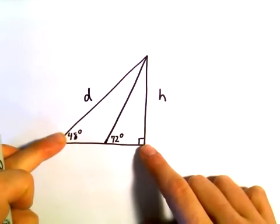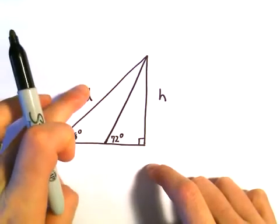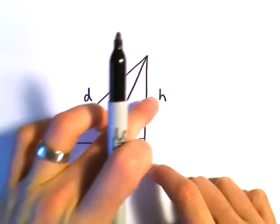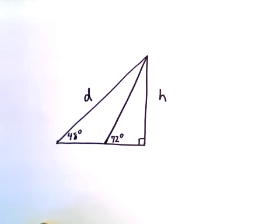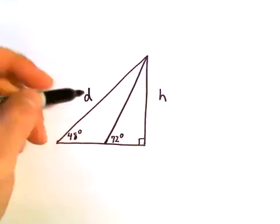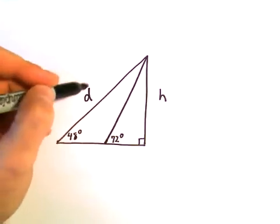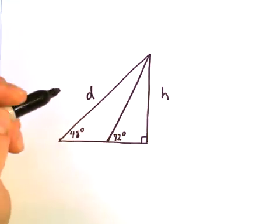I could now use the law of sines, because I could say sine of 90 over d would equal sine of 48 over h, and then we would be in business. But the problem is, we don't know that length d yet. Well, we're going to figure it out.